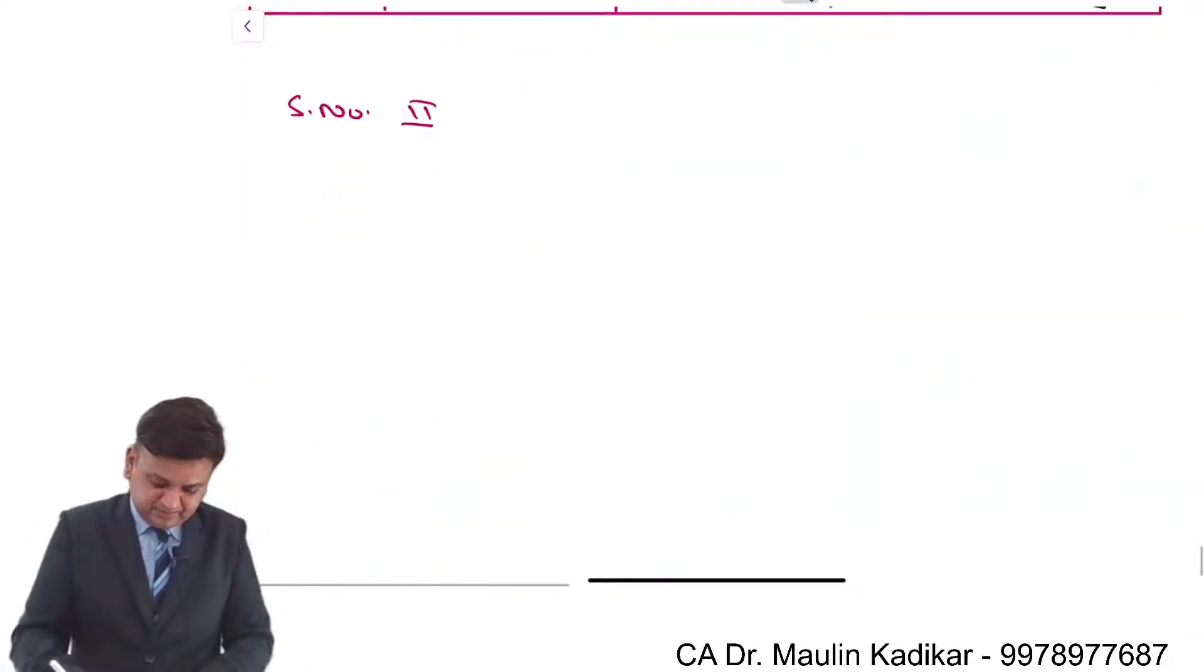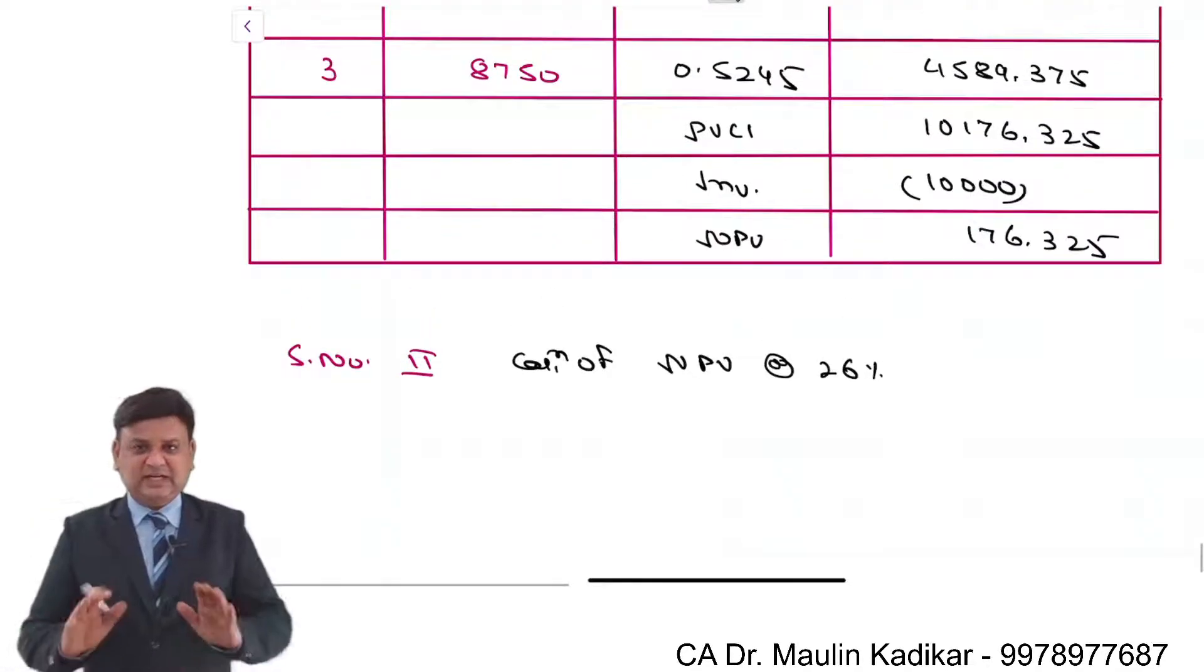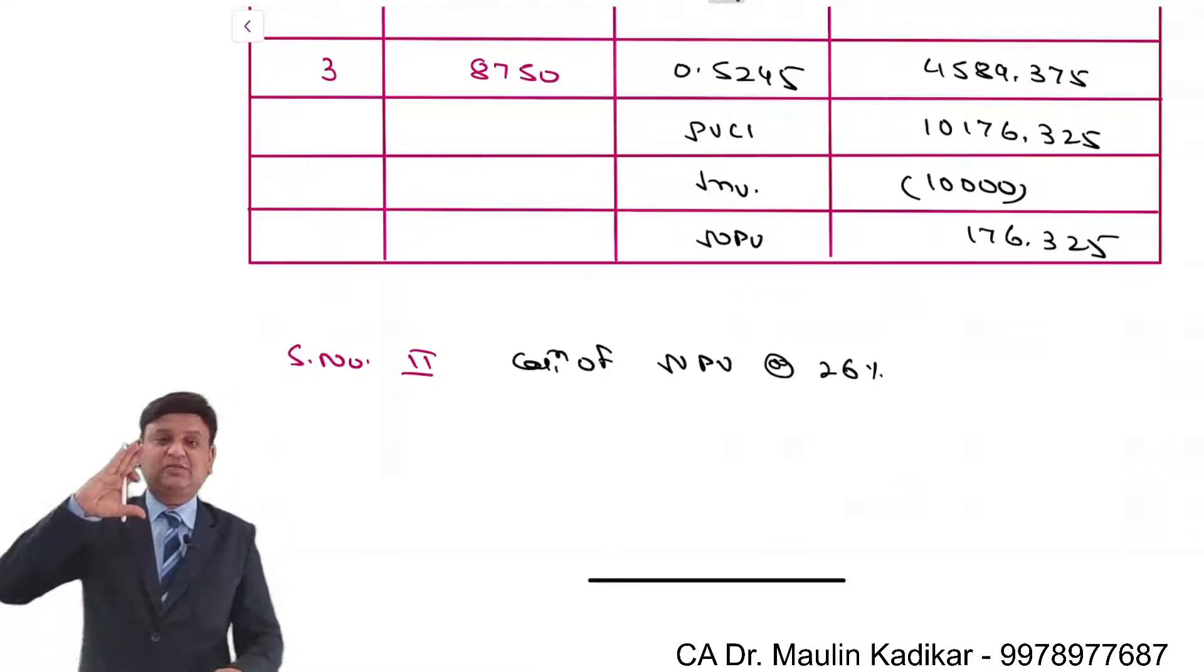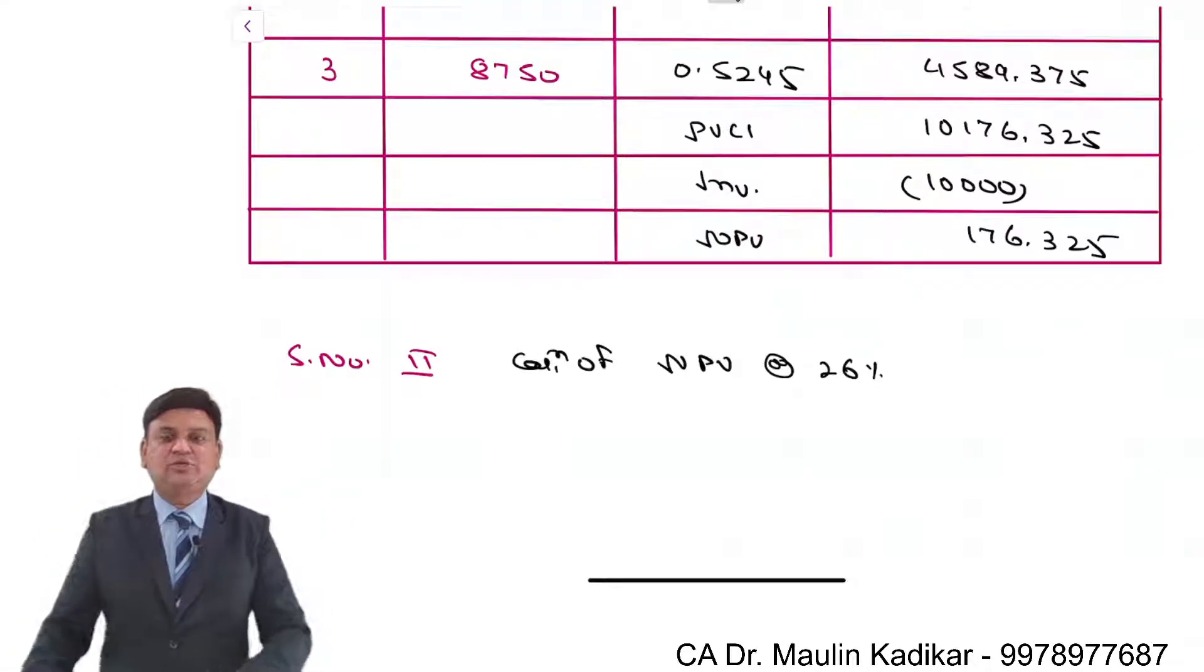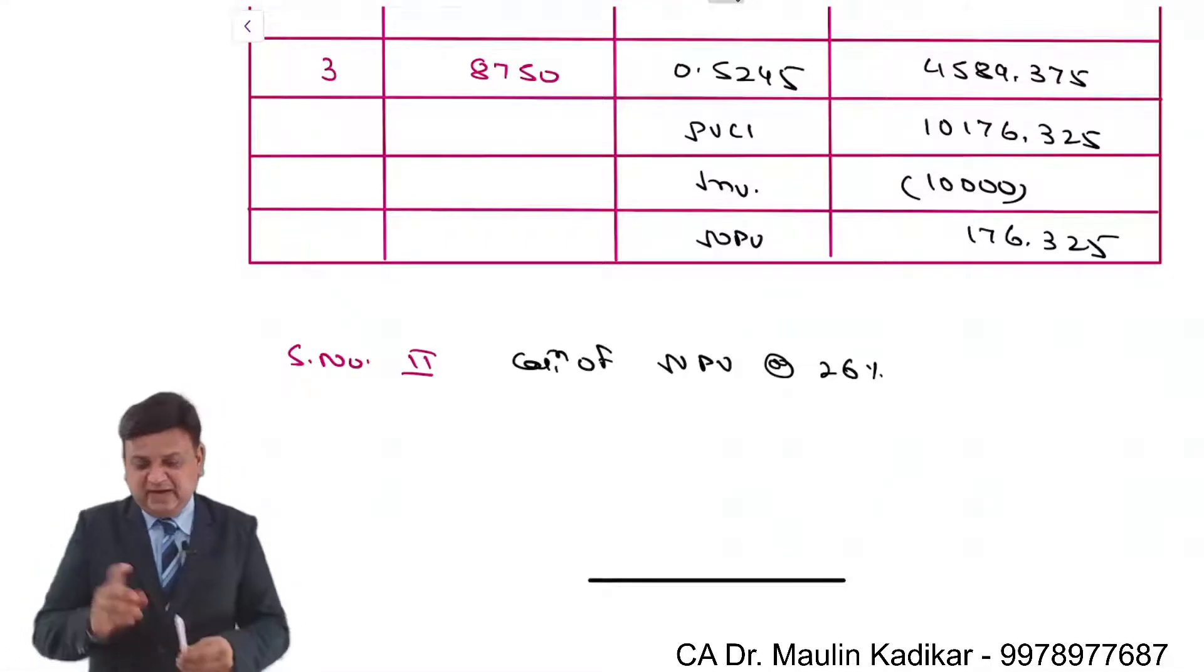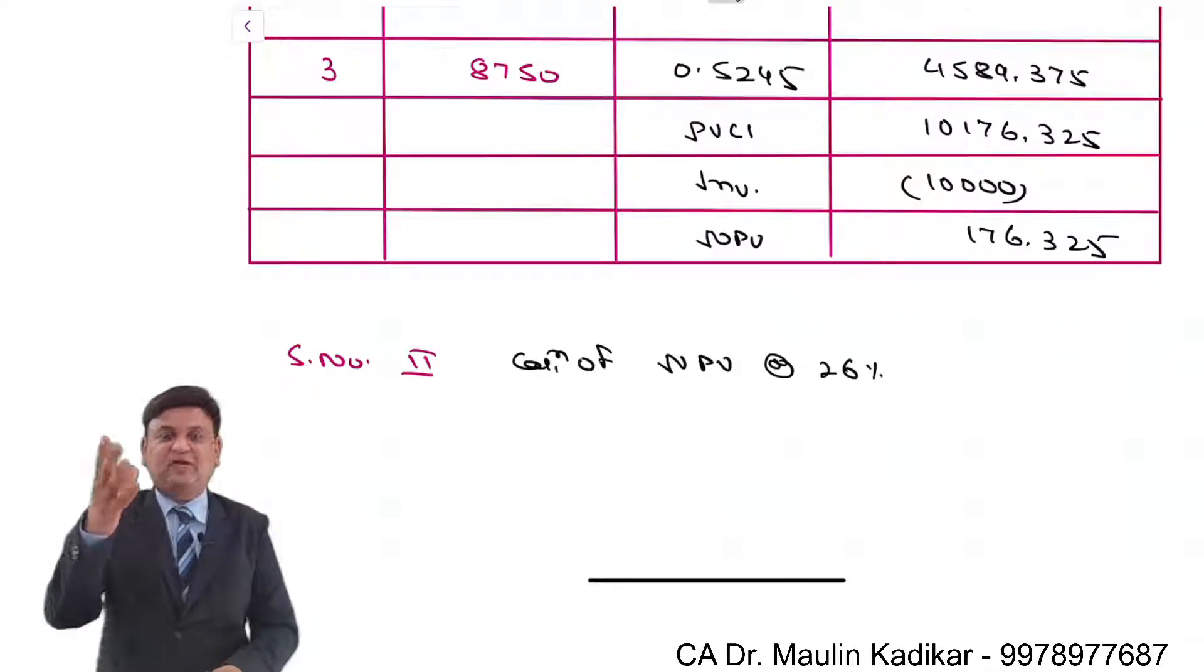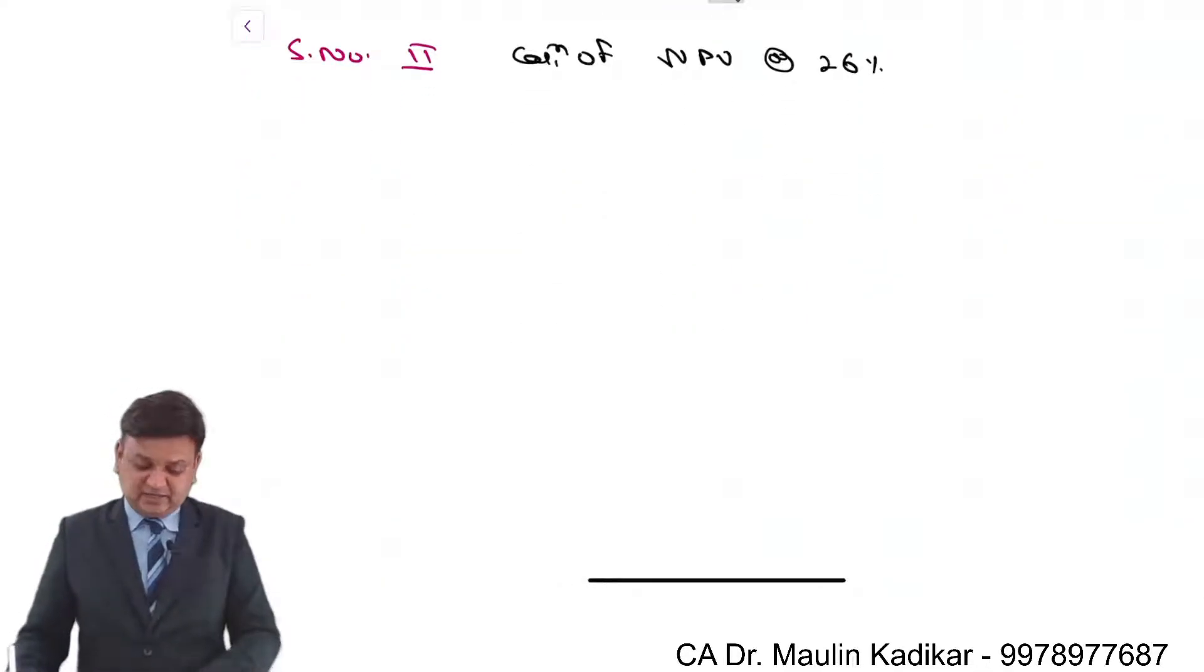It means that we are going in the correct direction. So step number 2 is calculation of NPV at the rate 26%. Why 26%? No reason. At the rate of 10% the NPV was 3267, huge positive NPV. So I made a big jump from 10% to 24% for the purpose of getting negative NPV. Unfortunately the NPV is once again positive but now it is marginally positive. So now I have to increase the cost of capital just by a few percentage so as to get the negative NPV. So now we are calculating the NPV again at the rate of 26%.